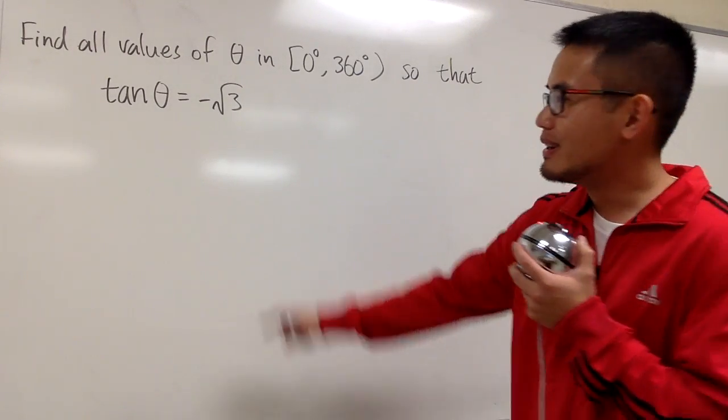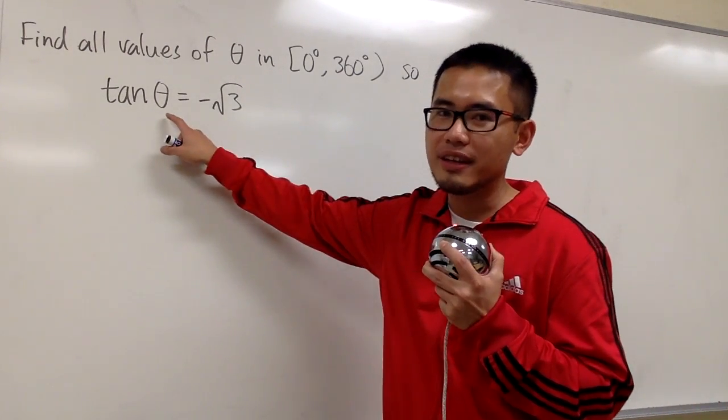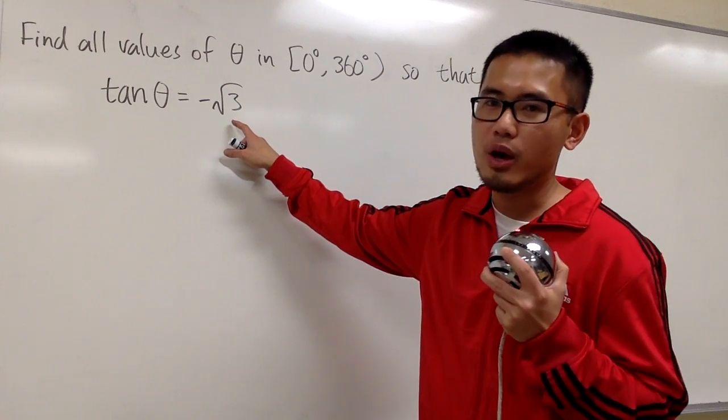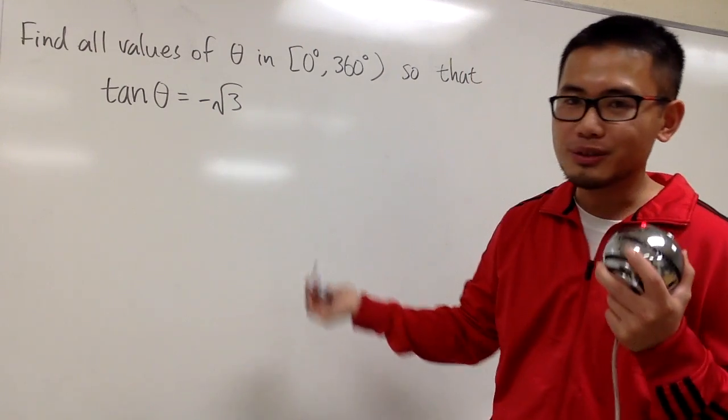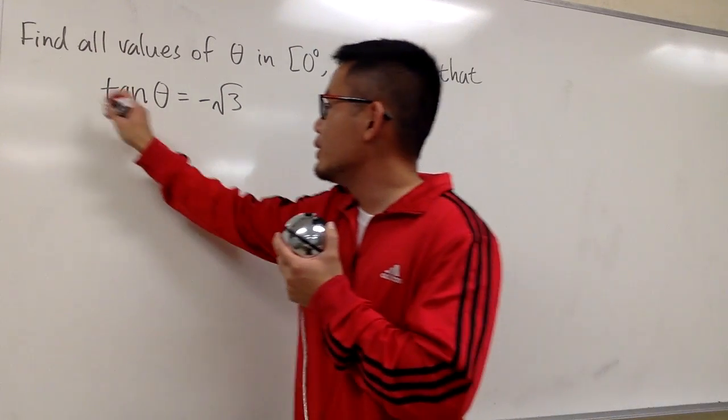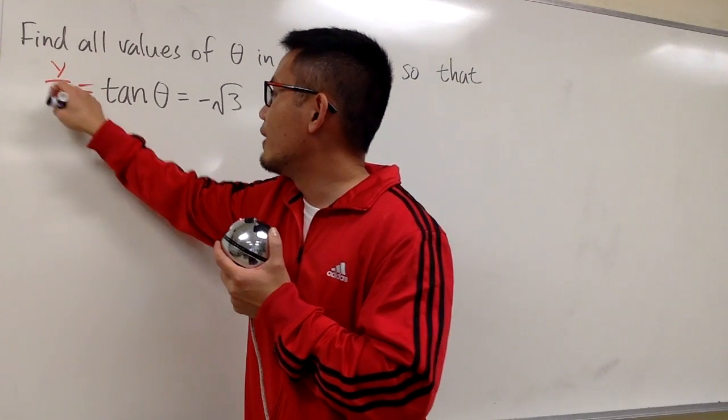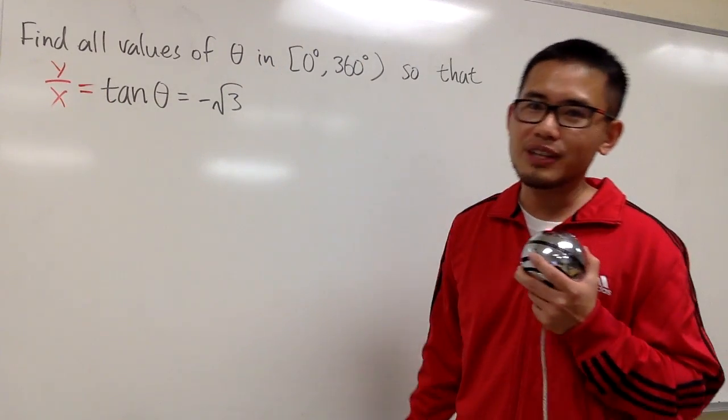Let me show you guys another example. This time I want to solve tan θ = -√3. Let's use the definition of tangent. We are going to use y over x for the definition of tangent in this case.